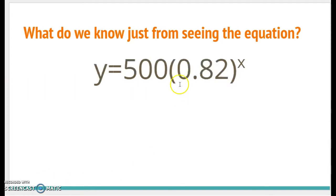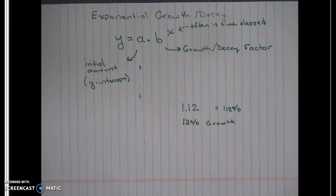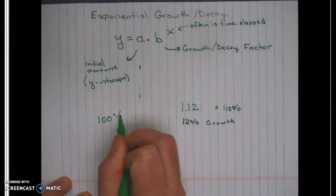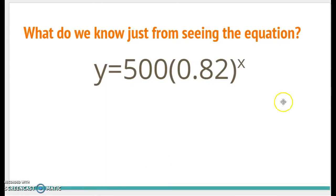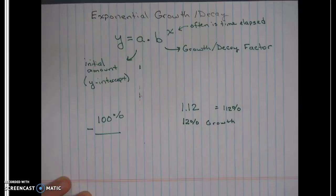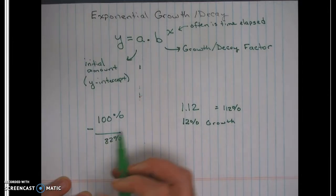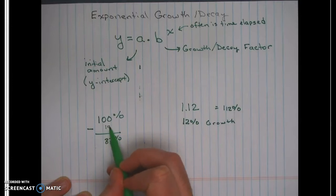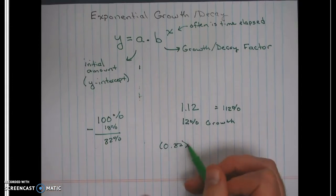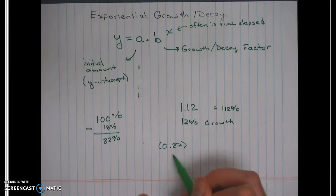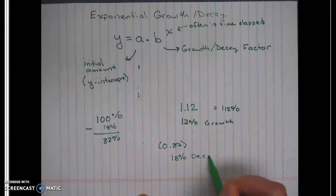If we look at something like 0.82, starting amount 500, you'll notice 0.82 is below 100%. If you start at 100%, how much would you have to take away to end up at 82%? You'd have to take away 18%. So when you see 0.82, because it's below 100%, we know that is a decay — specifically an 18% decay.